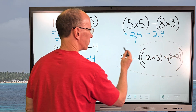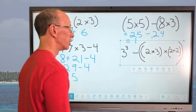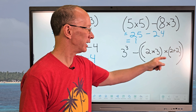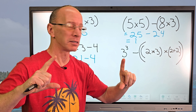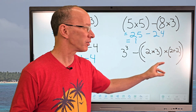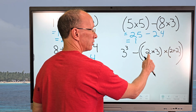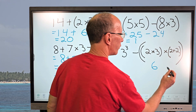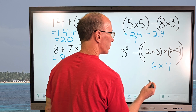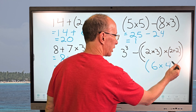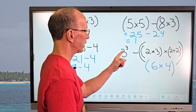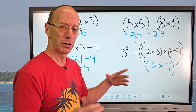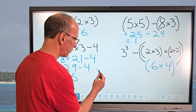Let me bring this problem up to give myself room to work. I see an exponent, a set of parentheses, and then a big parenthesis enclosing the others. We do what's inside the innermost parentheses first: 2 times 3 equals 6, and 2 plus 2 equals 4. I'll keep those parentheses in place. Now I'll handle the exponent — 3 to the third power — even though that's step two.